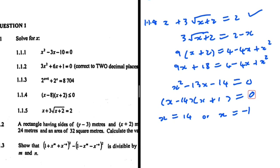Substituting x equals 14: (14 plus 3) times the square root of (14 plus 2) gives 26 — not 2 — so x equals 14 is rejected. Substituting x equals minus 1: (minus 1 plus 3) times the square root of (minus 1 plus 2) equals 2. So x equals minus 1 is our answer, and 1.1.5 is done. We'll cover 1.2 and 1.3 in a separate video.